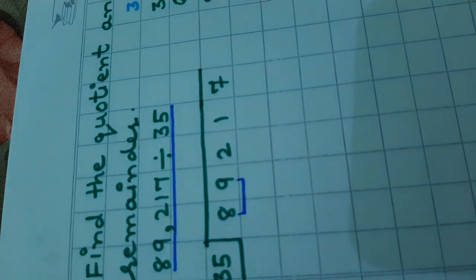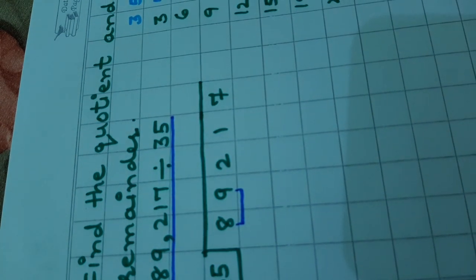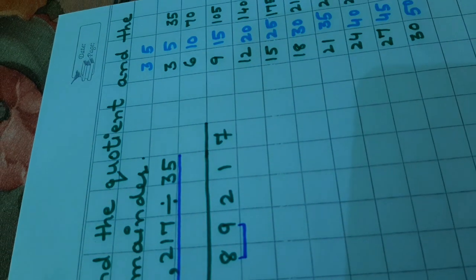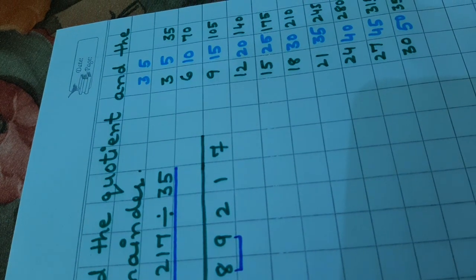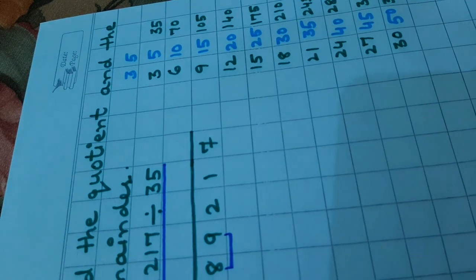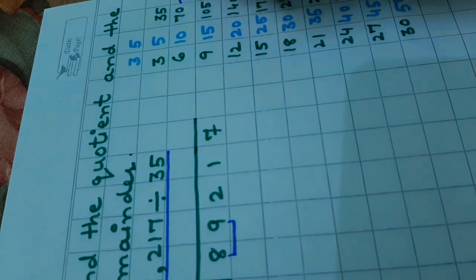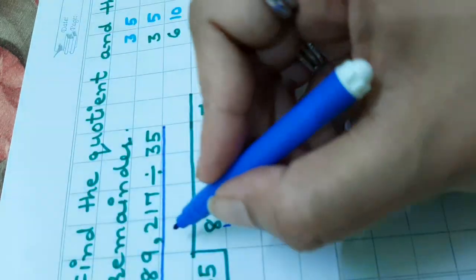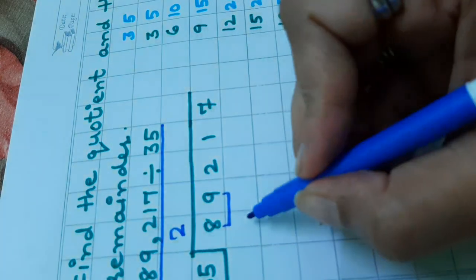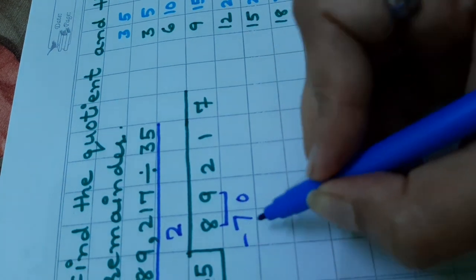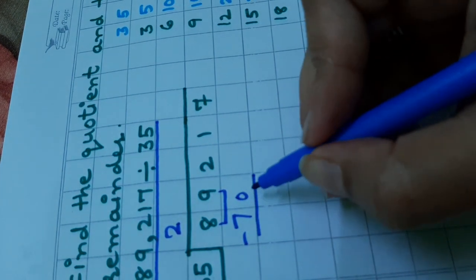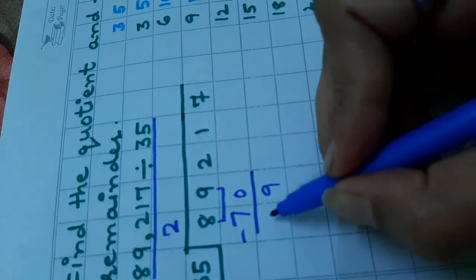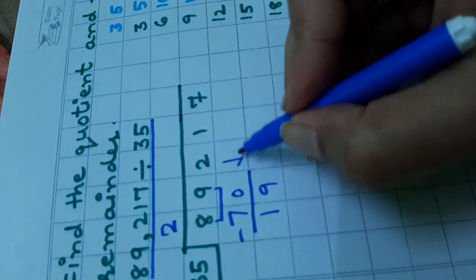We will find a number which is equal to 89 or a number which is nearer to 89 in the table of 35 and that number is 70. 35 twos are 70. Subtract it. 9 minus 0 is 9. 8 minus 7 is 1. Copy 2.